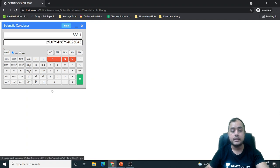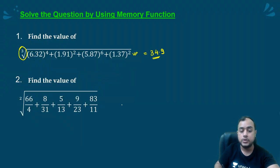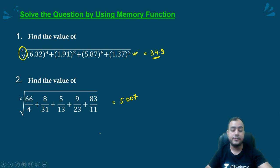I need to recall it and then take the square root. So I will press MR and then I will press the square root. 5.007. See how easy these calculations become if we use the memory function.